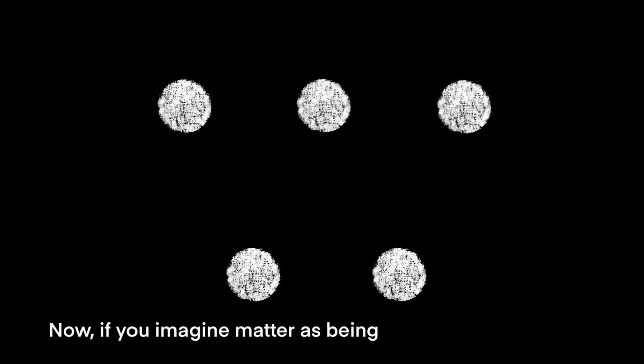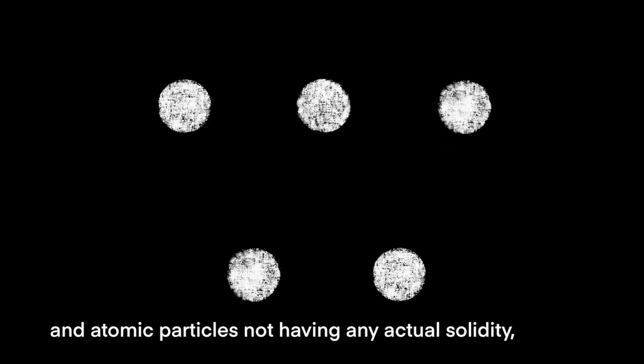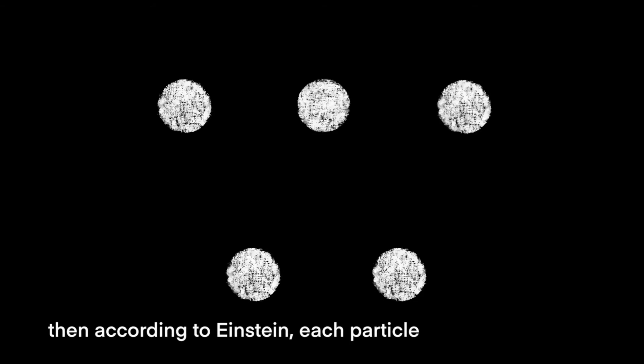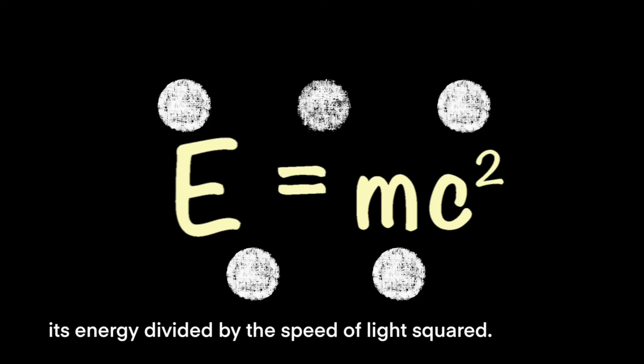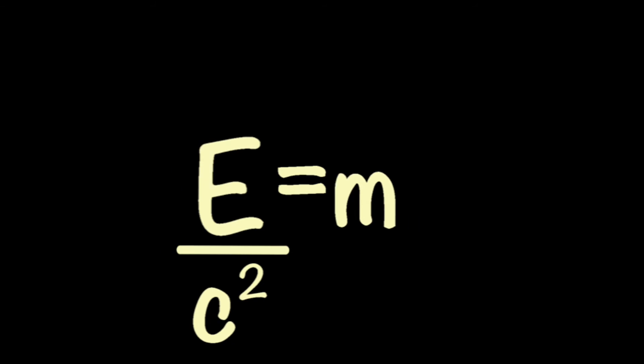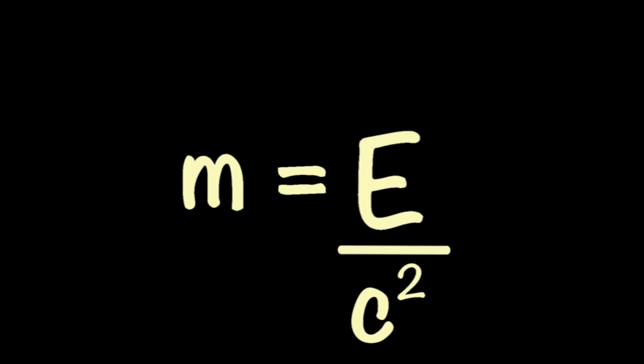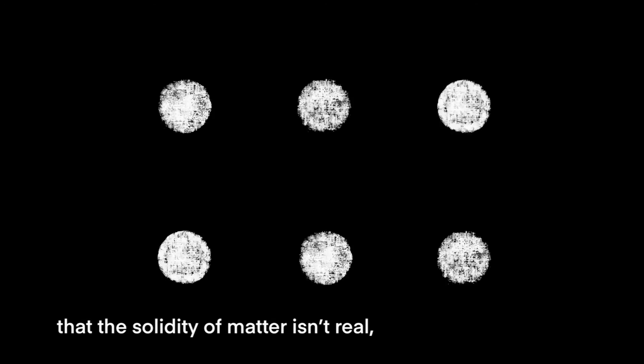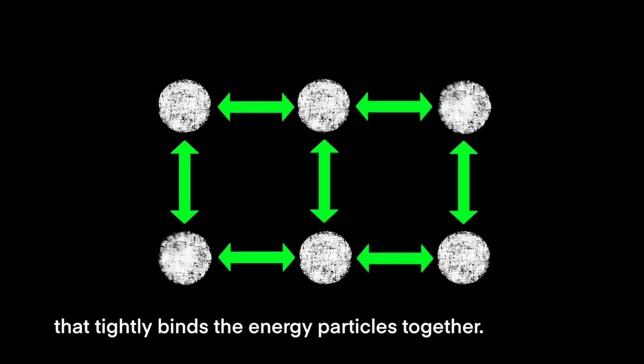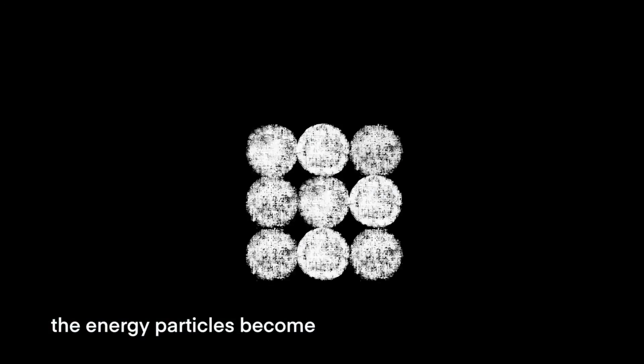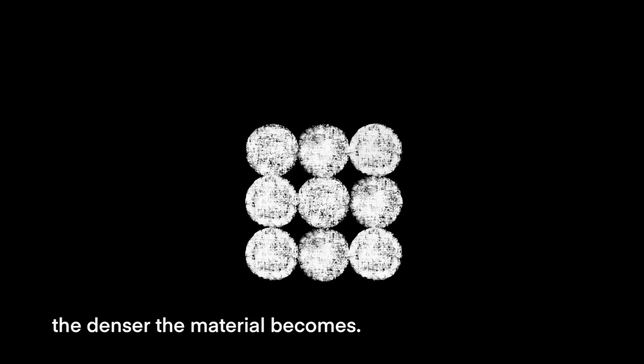Now if you imagine matter as being nothing but pure energy and atomic particles not having any actual solidity, then according to Einstein, each particle would have a mass equal to its energy frequency divided by the speed of light squared. This makes it easier to imagine that the solidity of matter isn't real. It results solely from the strong atomic force that tightly binds the energy particles together. As in some stars, the closer the energy particles become under their own gravity, the denser the material becomes.